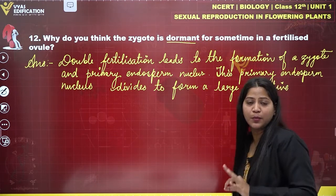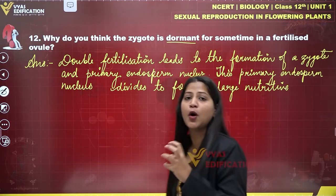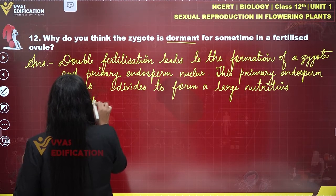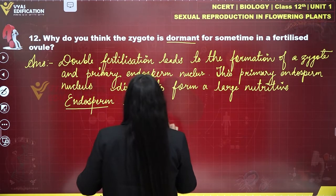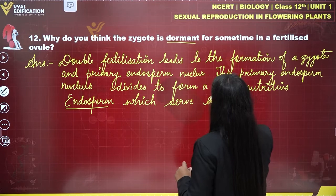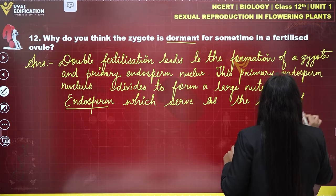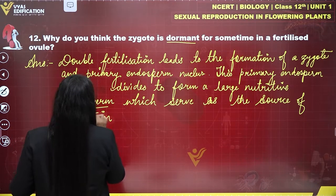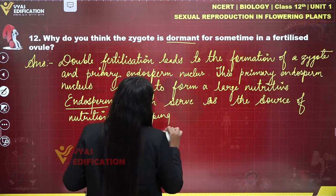This primary endosperm nucleus, which is made from triple fusion, undergoes several mitotic divisions to form a large nutritive endosperm. This endosperm serves as the source of nutrition for the developing embryo.